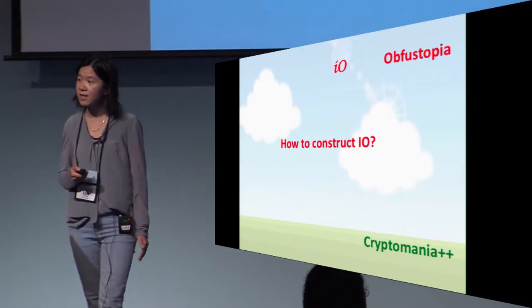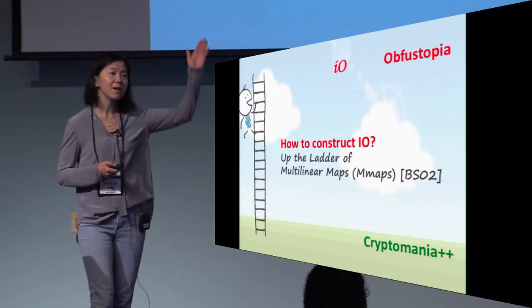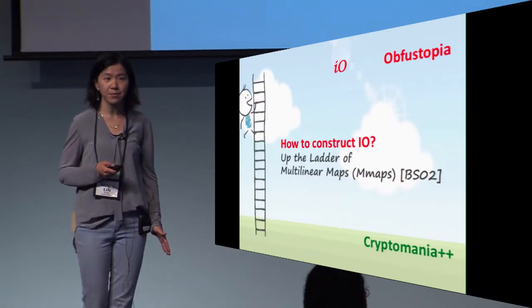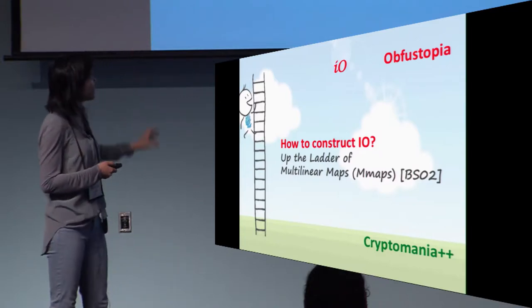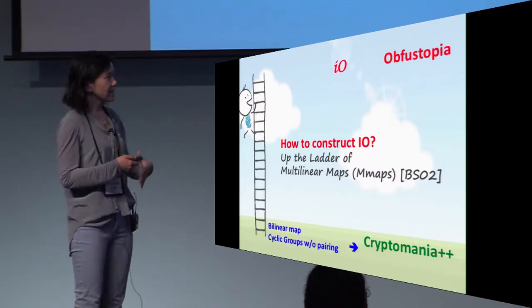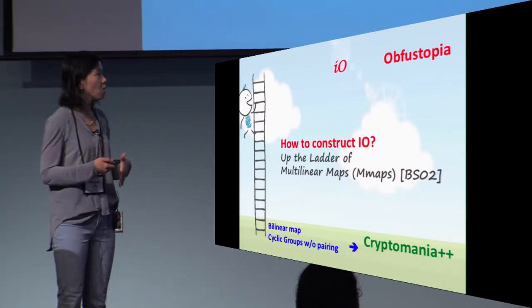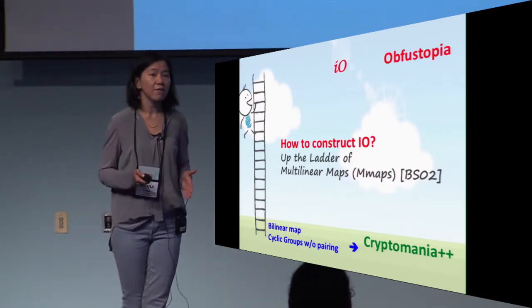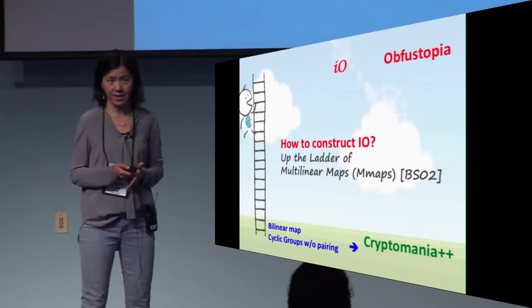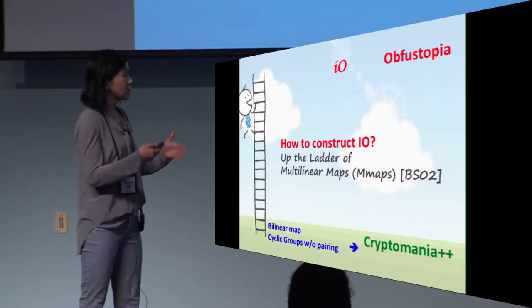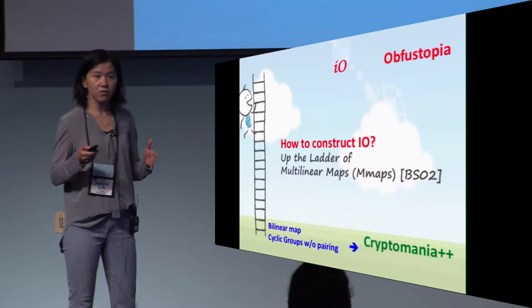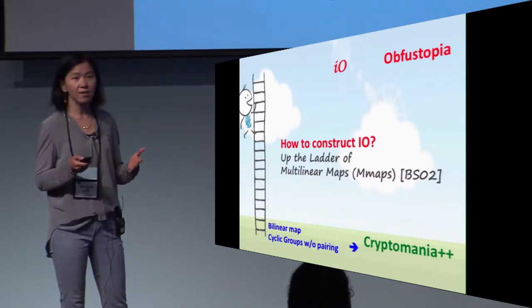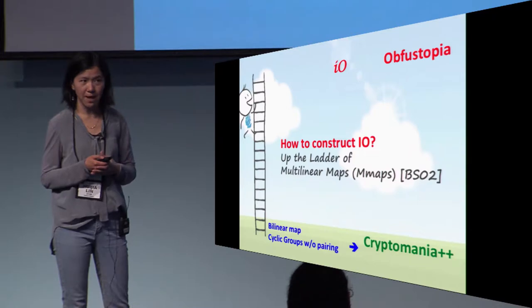A very successful paradigm so far is to climb up the ladder of multilinear maps. At the bottom of this ladder are cyclic groups without or with bilinear pairing that we all know and love, and we know they have huge implications in cryptomania. When we try to generalize these cyclic groups to let them have higher degree pairing, this will give us multilinear map.